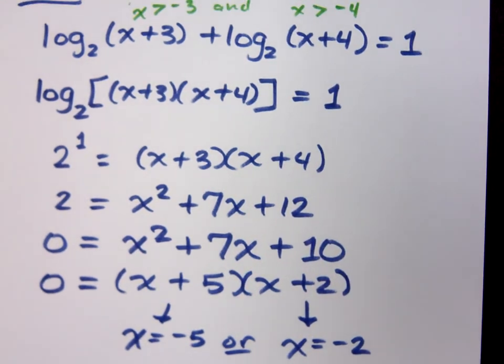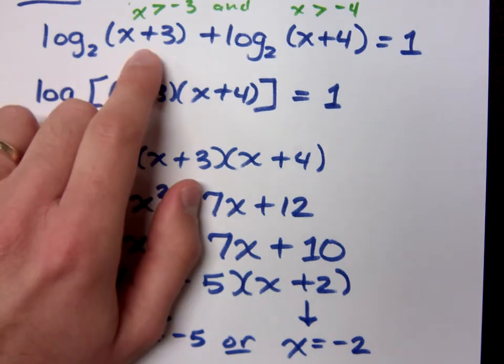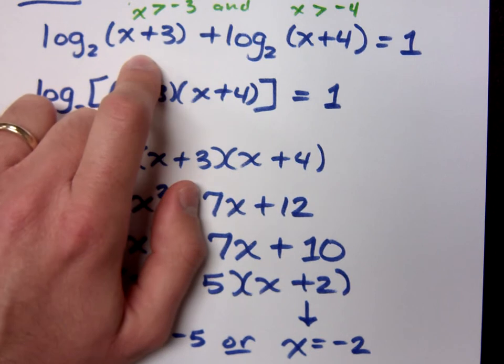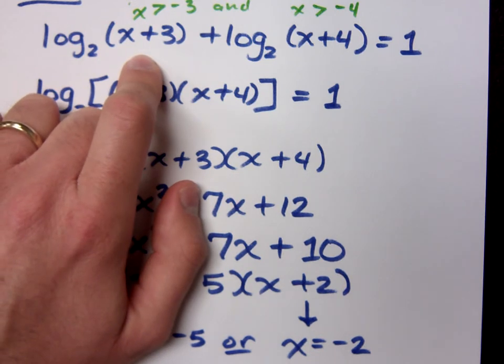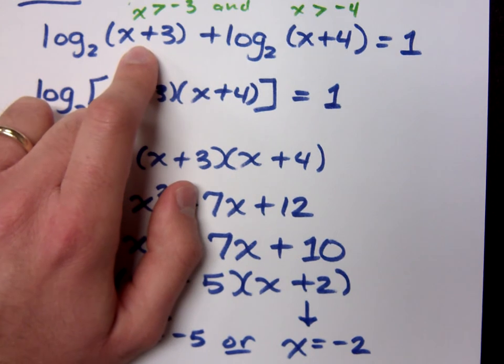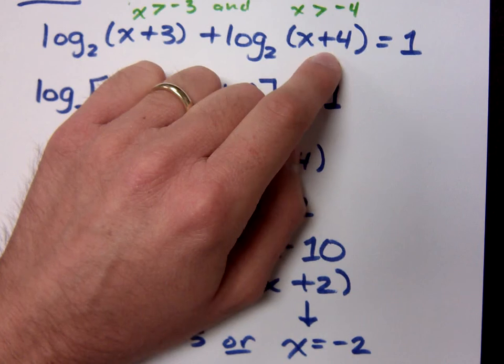But look at my numbers. Does negative 5 satisfy that? Where did the greater than just come from? When we talked about the domain for the logarithmic functions, the inside must be greater than 0. The domain was 0, not inclusive, to infinity, which means this has to be greater than 0, so it has to be greater than negative 3. This has to be greater than negative 4.